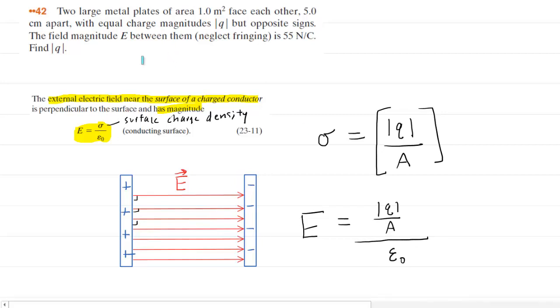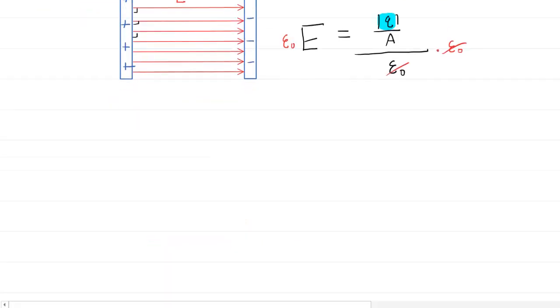The question wants us to find the magnitude of charge on each plate, so we're looking for this value right here. We're going to algebraically rearrange this equation. The first step would be to multiply both sides by epsilon naught. Those epsilons will cancel on the right-hand side, and then we have epsilon naught times the electric field magnitude equals the magnitude of charge divided by the area of the plate.